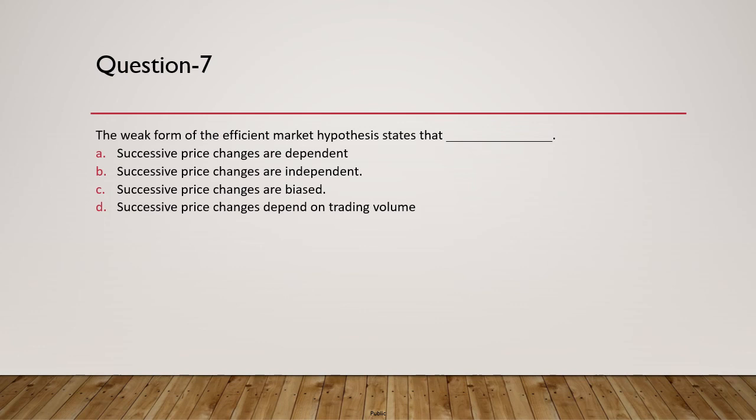Question 7: The weak form of Efficient Market Hypothesis states that successive price changes are: dependent, independent, biased, or dependent on trading volumes? Successive price changes are not related to each other — they are independent, consistent with the random walk concept. The answer is B — independent.